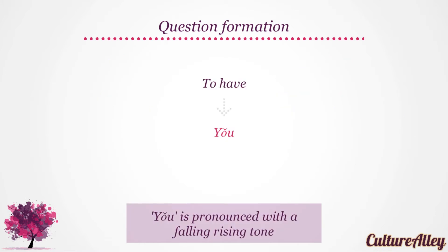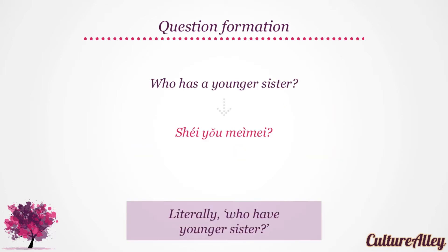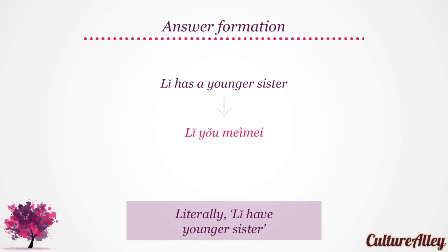Let's start with the phrase to have. To have translates to 有, pronounced with a falling-rising tone. Let's see how we can say who has a younger sister in Mandarin. Who becomes 谁, has becomes 有, and younger sister translates as 妹妹. Thus, who has a younger sister is translated as 谁有妹妹, literally meaning who have younger sister. An answer to the above question can be 李 has a younger sister, which becomes 李有妹妹, literally meaning 李 have younger sister.